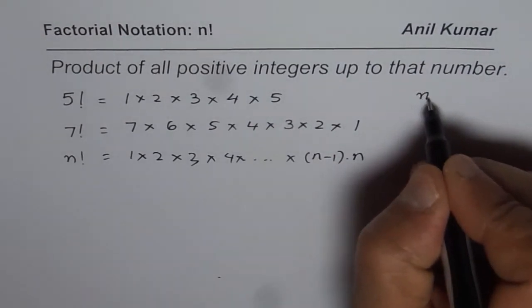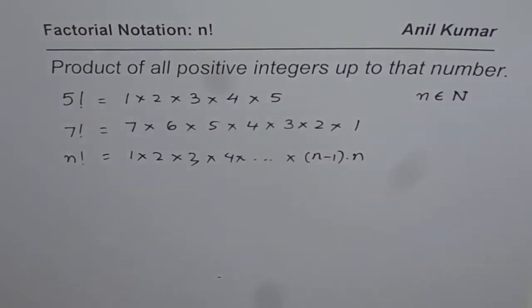So we are saying n belongs to natural numbers, basically. So that is what factorial notation is.